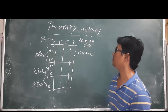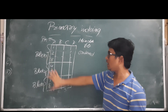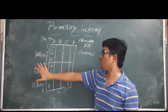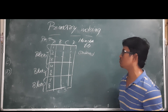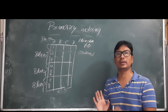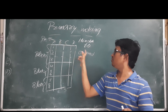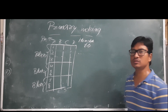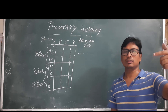We have some values for B, C, D which we are not considering. All nine records have been divided into three blocks: block one, block two, and block three. Primary indexing means we are performing indexing on the primary key of an ordered data file. This is required because when writing SQL queries, we query on some field.